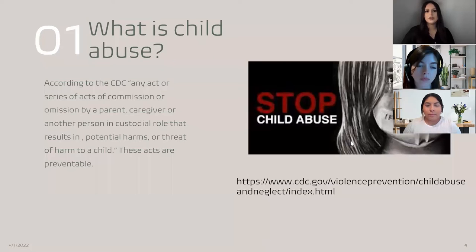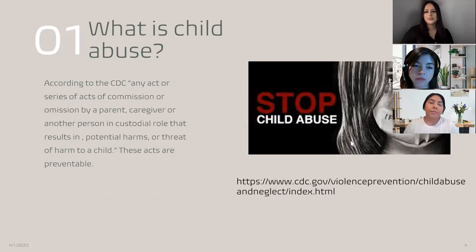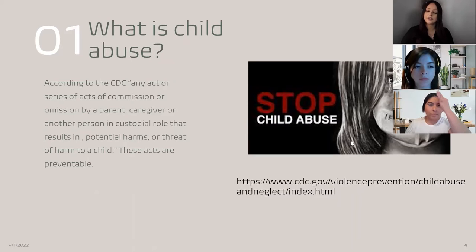What is child abuse? Within child abuse, there are acts of commission that describe what child abuse is. Some of these are words or actions that cause potential harm or threat to the child. Examples include physical, sexual, and psychological abuse. Acts of omission include failure to provide basic needs and protection from possible harm — such as physical, emotional, medical neglect, inadequate supervision, and exposure to violent environments.